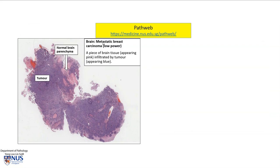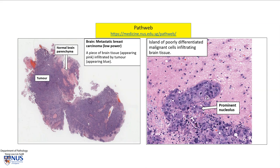Microscopically, this is an example of metastatic breast carcinoma in the brain. At low magnification, the pink area is the brain parenchyma, and we can see the tumor — the purplish area — infiltrating into the brain parenchyma. At high magnification, we can see the astrocytes of the brain parenchyma, and there are large cohesive sheets of very pleomorphic malignant cells. This particular cell is very large with a huge nucleus and a very prominent nucleolus, illustrating metastatic breast carcinoma infiltrating into the brain.